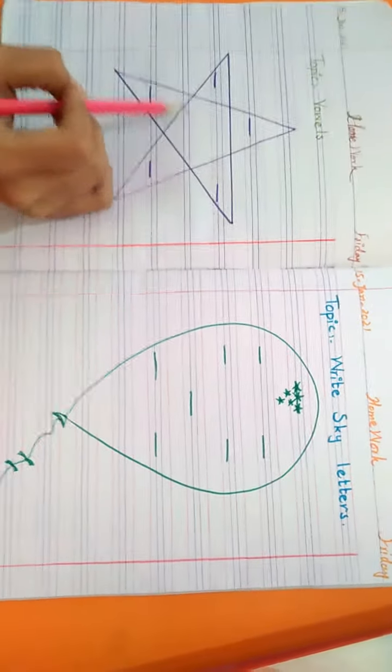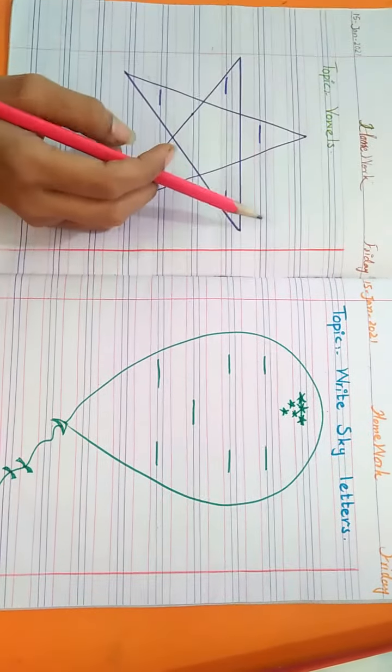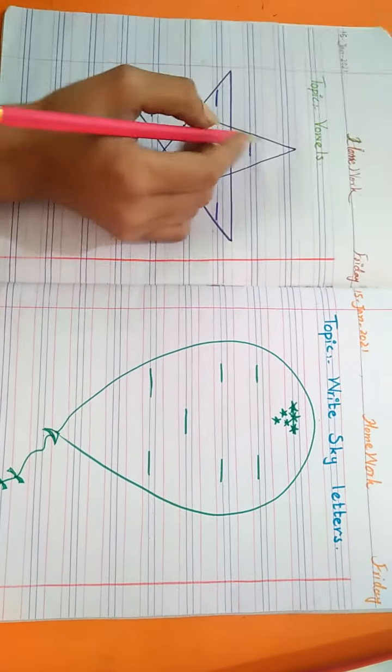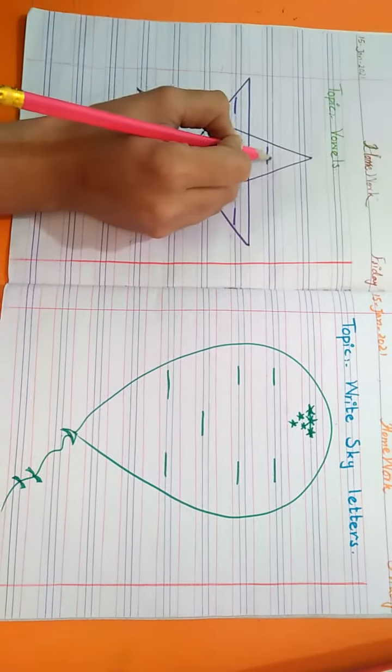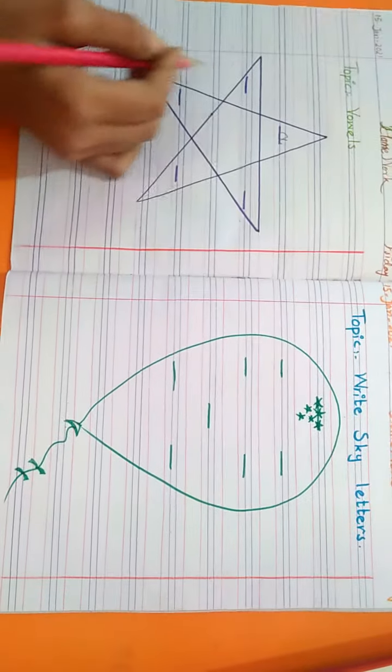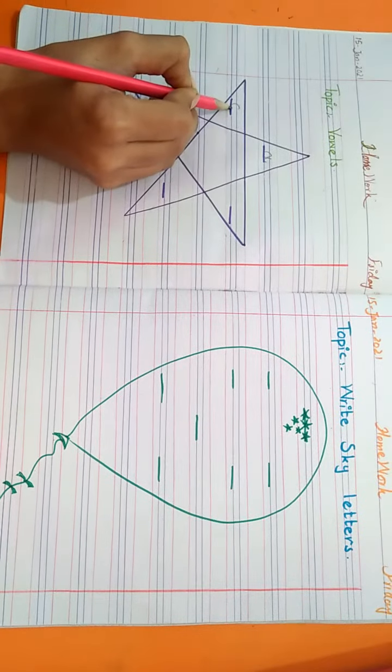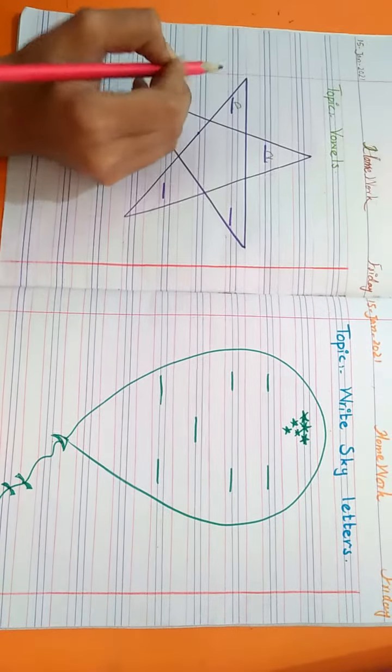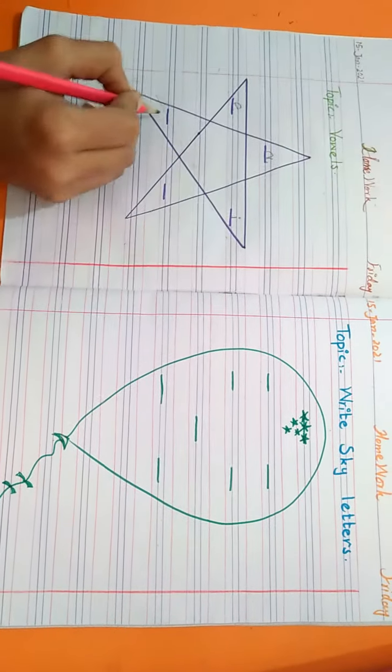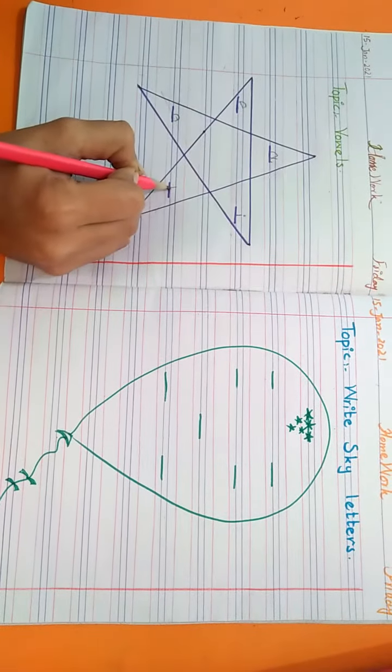So here you can see, star have five corners and the vowels are in five number. So the first vowel is A. Here we write A. Second is E. Third is I. O and U.